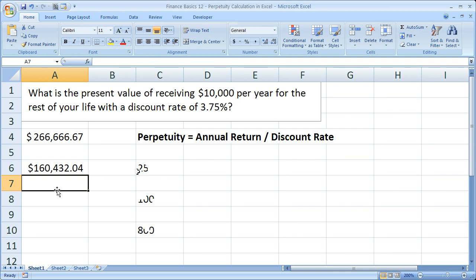Okay. So obviously that makes sense, right? It's for a lot less time than the rest of your life. Here equals PV, open, 0.0375.